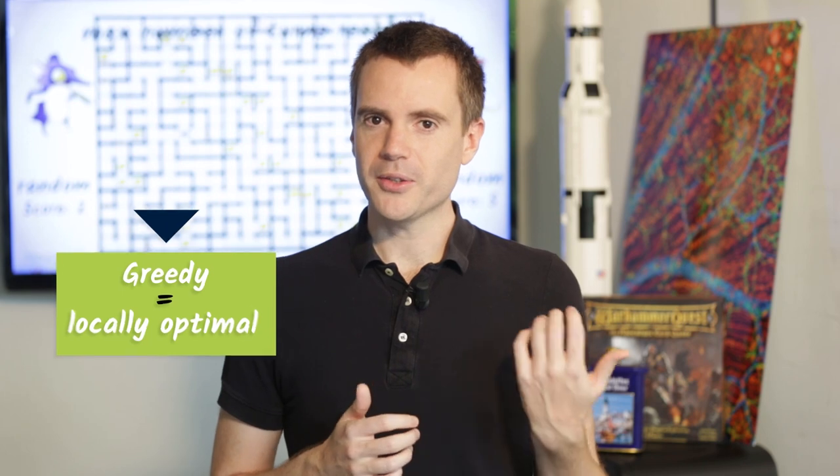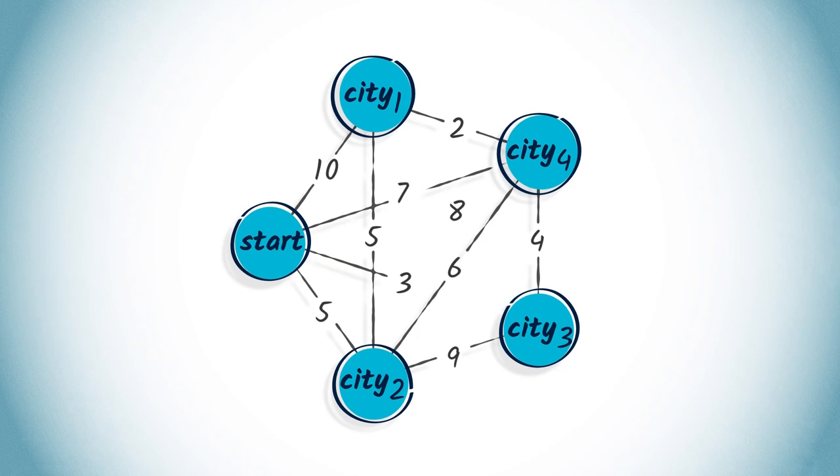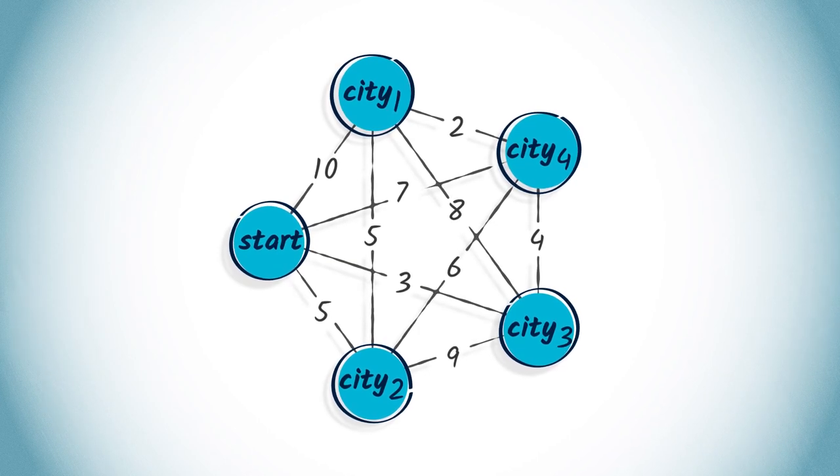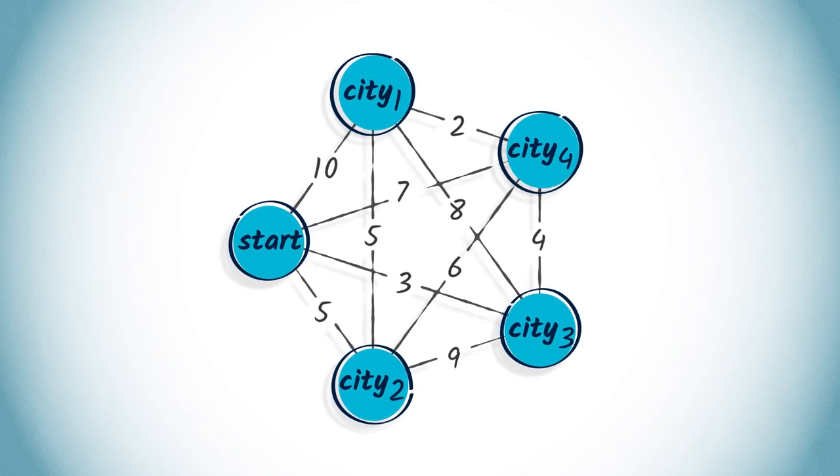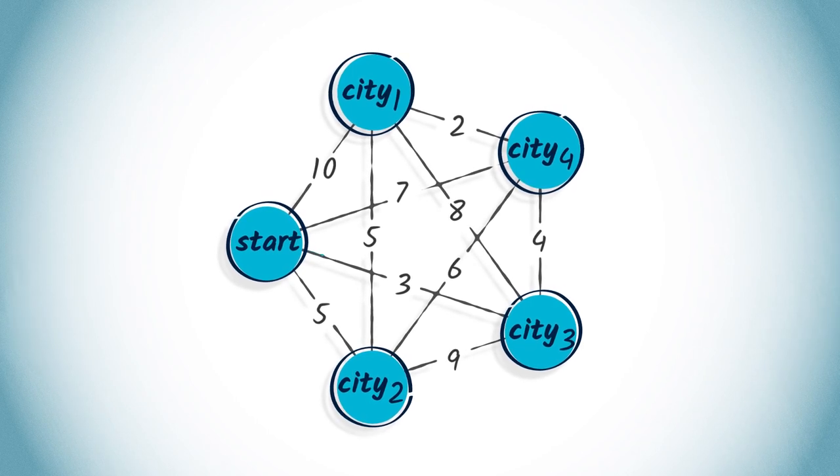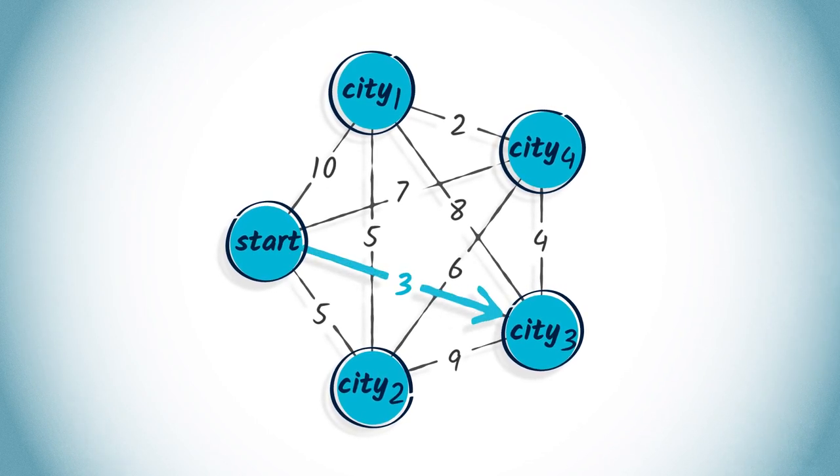To illustrate this, let us consider the traveling salesman problem, the TSP, which we have seen is a complex problem to solve. Instead of looking for an exact solution, we can choose to always go to the nearest unexplored vertex from the current vertex we are at.